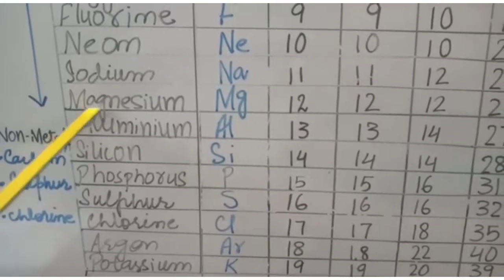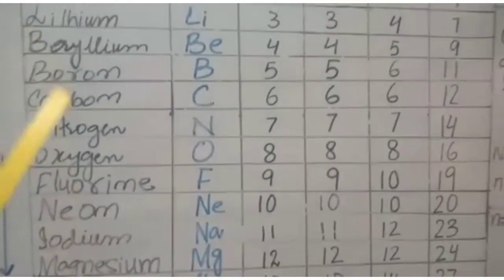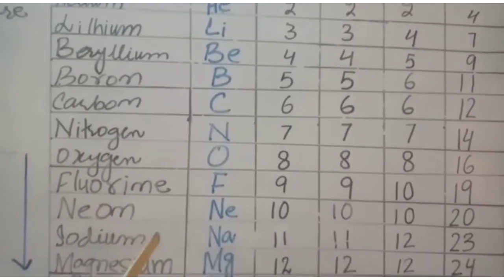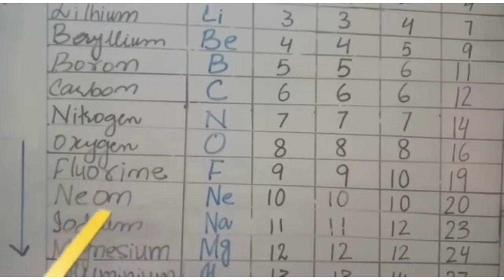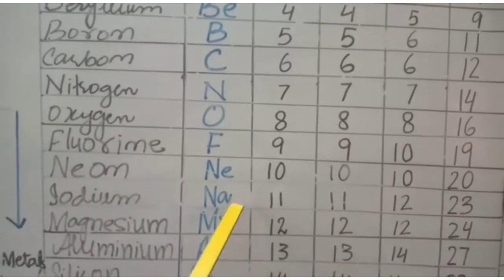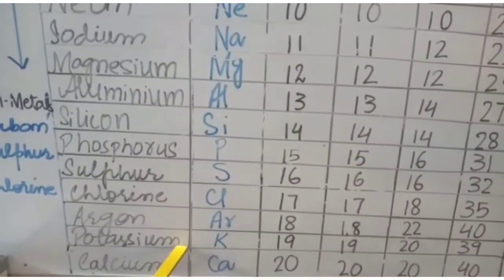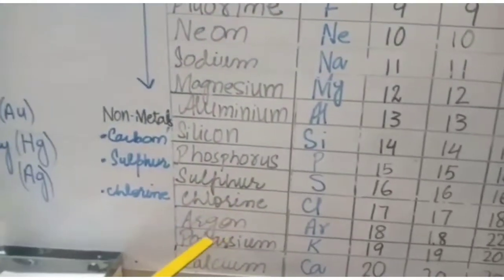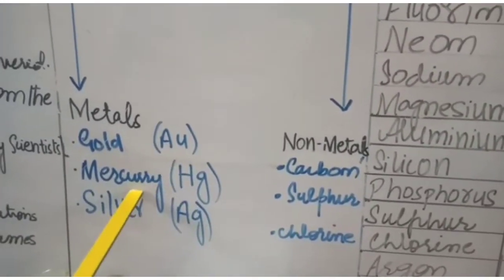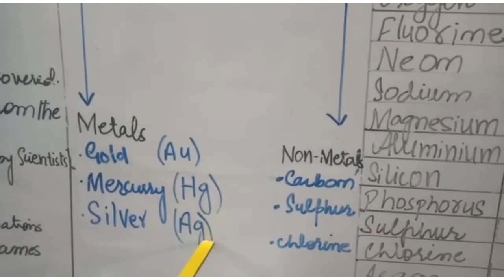Another example is magnesium (Mg). And the fourth rule: some elements use their Latin names — for example, sodium uses the Latin name 'Natrium', so its symbol is Na.